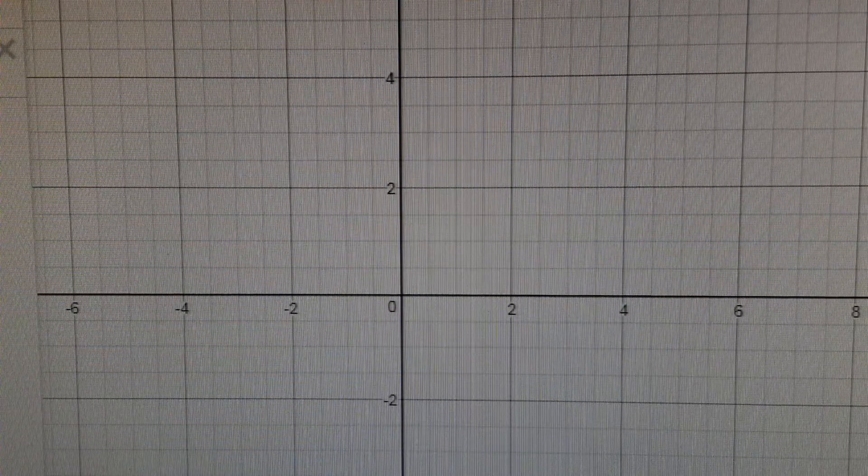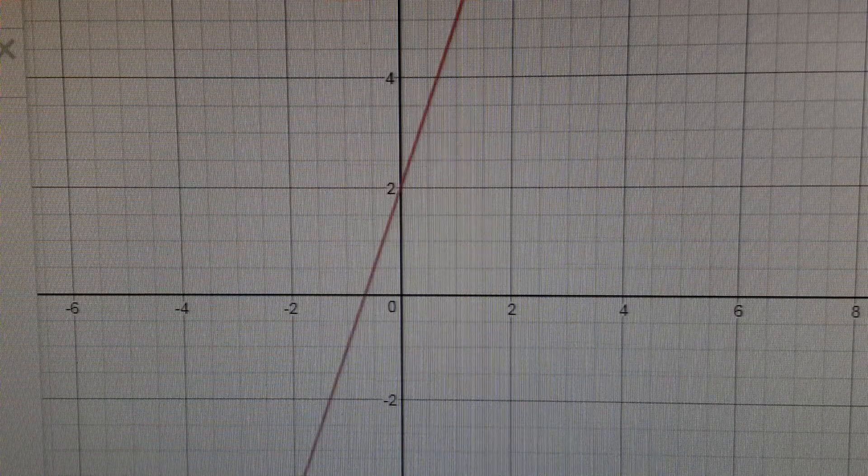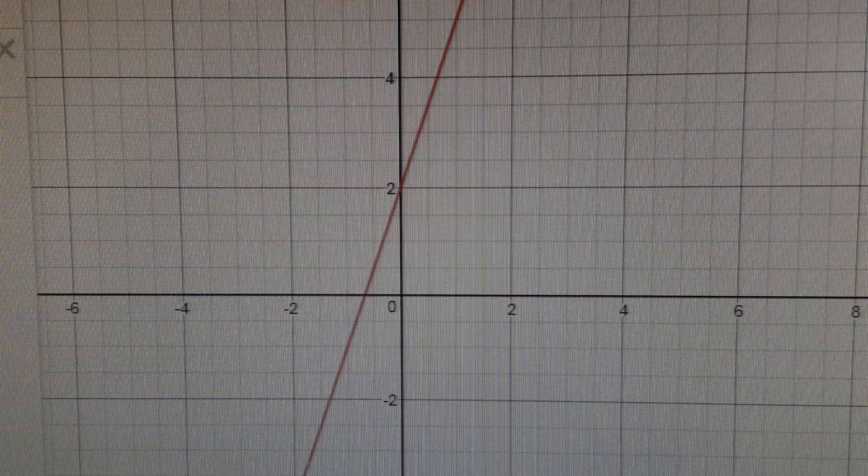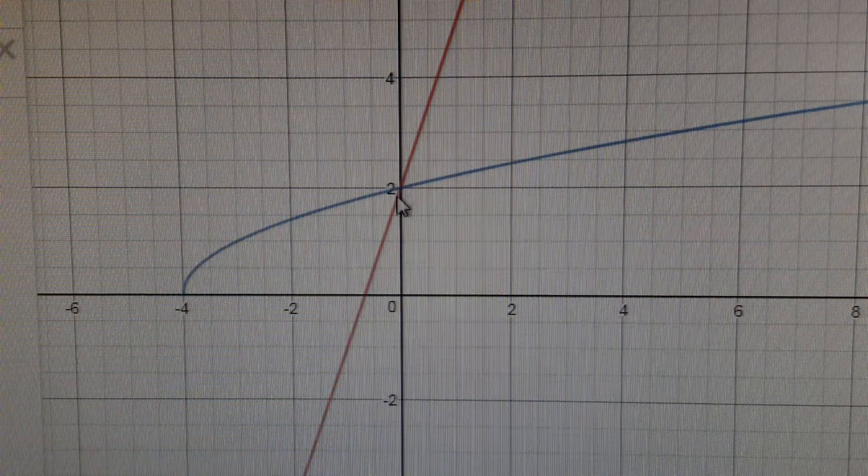Alright, let me show you how this looks on Desmos. We have our first equation which is f of x equals 3x plus 2. Here's our equation on Desmos, the red line. And then we have our second equation which is the square root of x plus 4 and here we go. We can clearly see that on Desmos our intersection is definitely going to be at 0, 2.